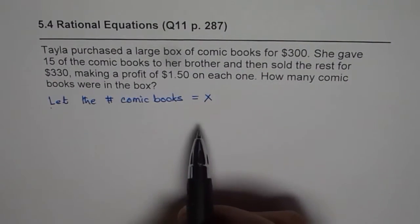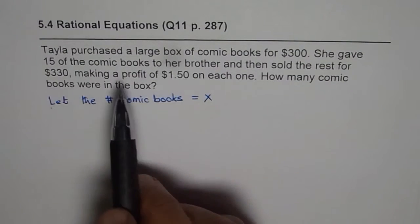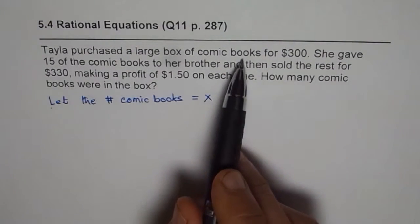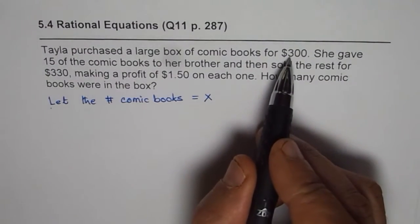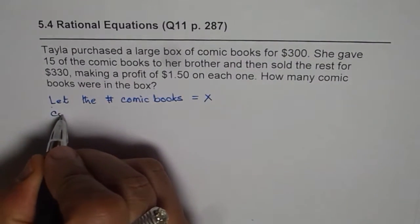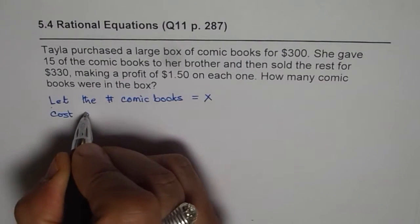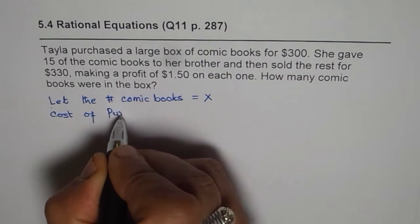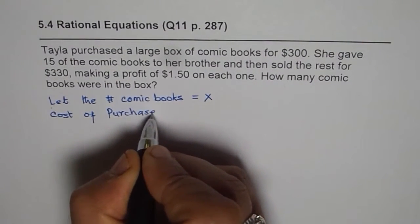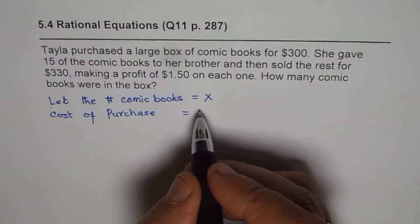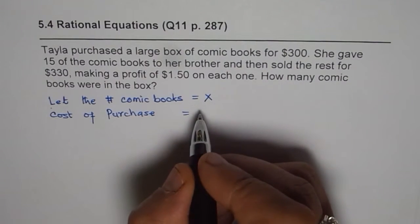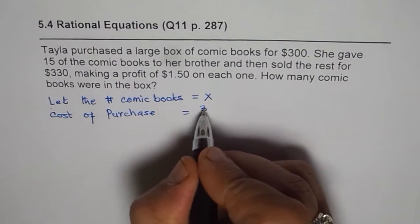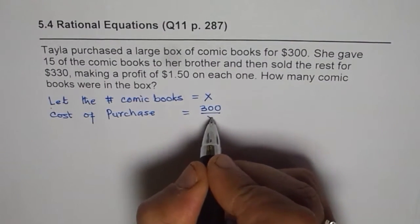Now as you know the technique here is to find the rate. Tayla purchased a large box of comic books for $300. So what is the cost of purchasing each book? So cost of purchase will be number of books is x divided by the total amount paid. So for one book it should be $300 divided by x.